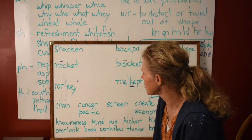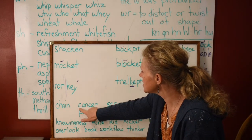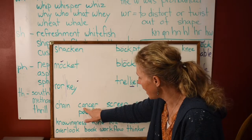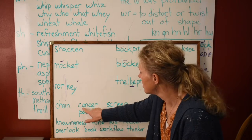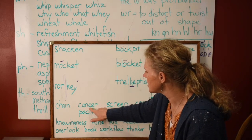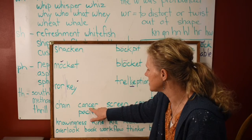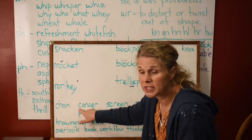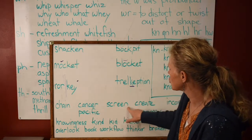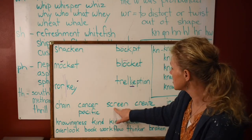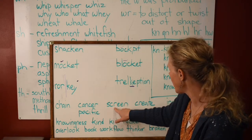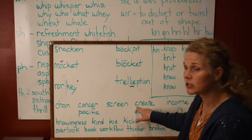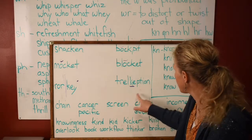Now look at 'cancer' — spelled with C because A is not an E, I, or Y. But see this C says S because it is followed by E, I, or Y. 'Screen' — saying K and not followed by E, I, or Y. 'Create' — same thing, not followed by E, I, or Y. So that's when you spell the K sound with C at the beginning of a word. You can't spell CK at the beginning of a word.